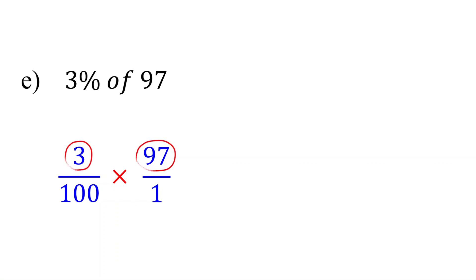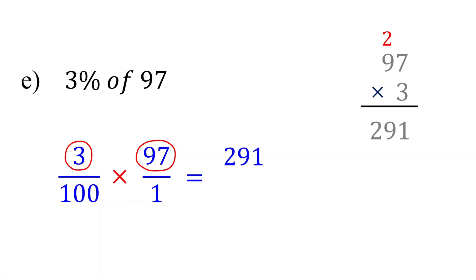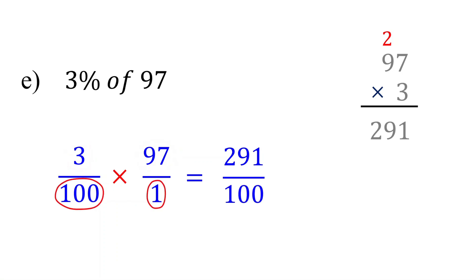In the numerator, multiply 3 and 97. 3 times 7 is 21, so we write the 1 down and carry the 2 over. Then 3 times 9 is 27, and 27 plus the 2 carried over is 29. So 3 times 97 equals 291. In the denominator, 100 times 1 equals 100. Dividing by 100 is the same as moving the decimal point 2 places to the left. So this is equal to 2.91.